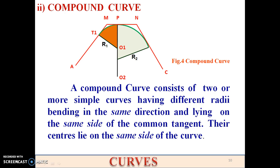A compound curve is made up of two curves of different radii bending in the same direction and lying on the same side of the common tangent. From the figure, Mn is the common tangent, and both curves with different radii have their centers lying on the same side of that common tangent.